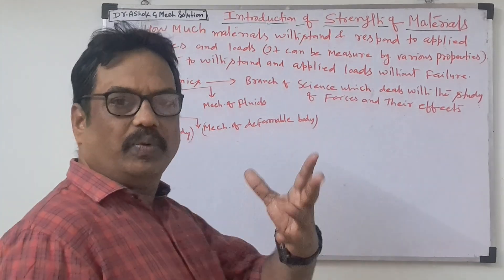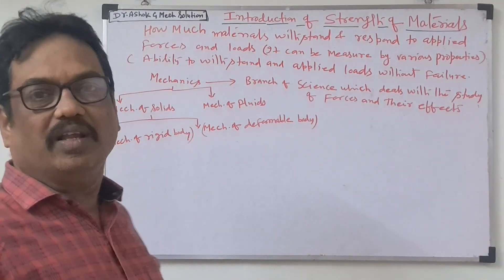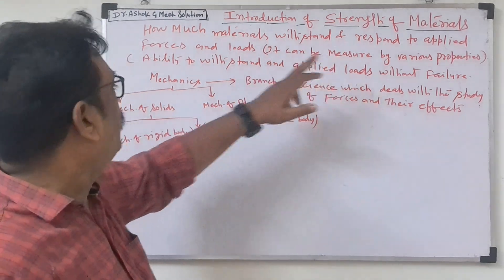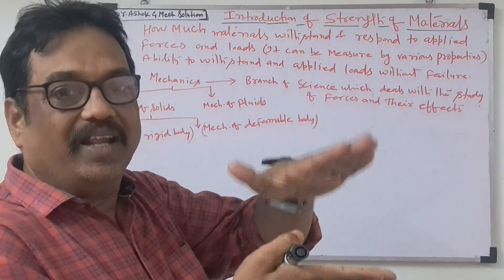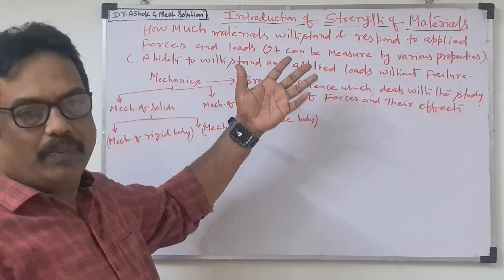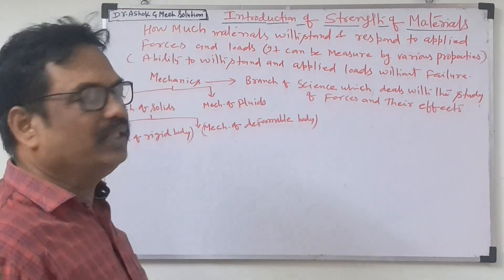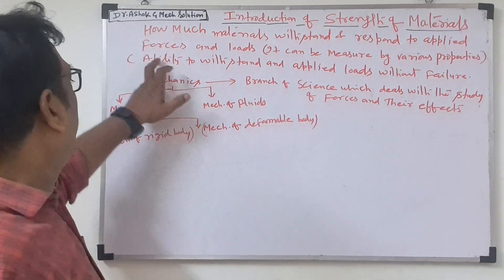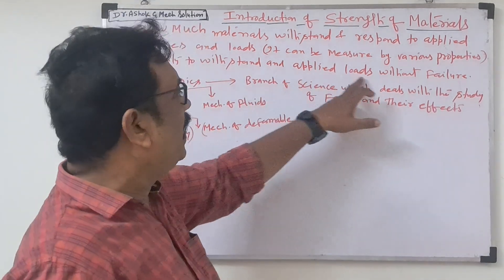We also have lab studies like the Rockwell hardness test and Brinell hardness test, where we check the strength of a material. So how much materials withstand and respond to the applied force — once you are applying the force, how much they can withstand and resist. That is the strength of the material, measurable by various properties such as plasticity, ductility, toughness, and creep. In one line: ability to withstand an applied load without failure.